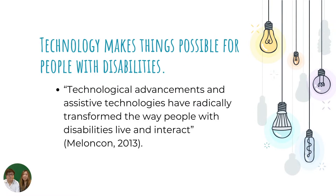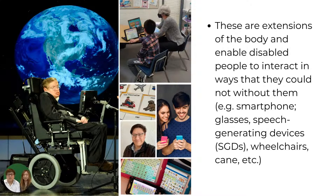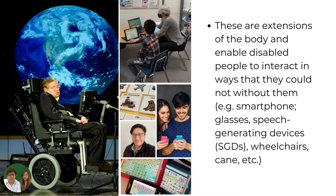Technology makes things possible for people with disabilities. Technological advancements and assistive technologies have radically transformed the way people with disabilities live and interact. These extensions of the body enable disabled people to interact in ways that they could not without them. Think about smartphones and glasses and speech-generating devices, wheelchairs, canes, and more.